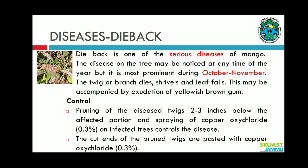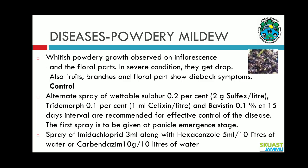Dieback is one of the serious diseases of mango. The disease on the tree may be noticed at any time of the year, but it is most prominent during October to November. The twigs and branches dry, shrivel, and leaves fall. For controlling dieback, prune diseased twigs 2 to 3 inches below the affected portion. Spray copper oxychloride 0.3 percent on infected trees. The cut ends of the pruned twigs are pasted with copper oxychloride 0.3 percent.